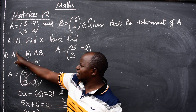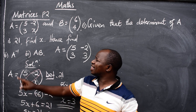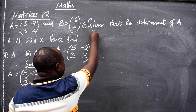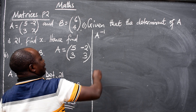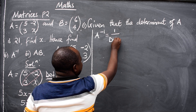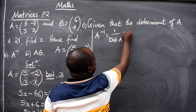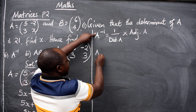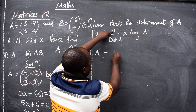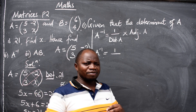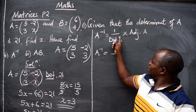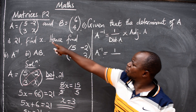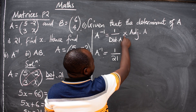How do we find the inverse? When you see A raised to the power negative 1, it means you should find the inverse of matrix A. The formula is: the inverse of matrix A equals 1 over the determinant of A, times the adjoint of matrix A. We are told the determinant of A is 21, so we substitute 21 here. Now multiply by the adjoint of A.